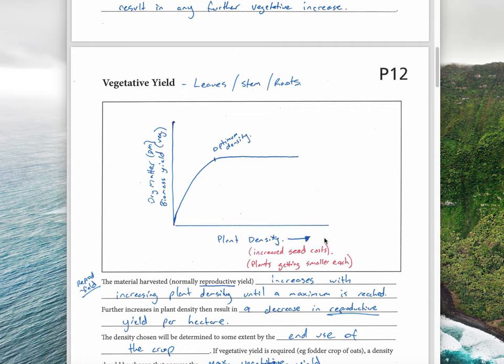As plant density increases, the dry matter (DM) or biomass yield increases up to a point. When you get more and more plants, you don't actually get any more yield. Every individual plant is getting smaller and smaller, and each plant will have less yield, but there will be more of them. So you end up with the same amount of yield.